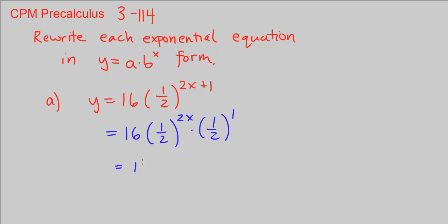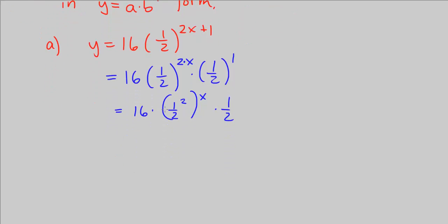That gives us 16 times one-half to the power of 2x. We can rewrite this as one-half to the power of 2 times x, or one-half to the power of 2 then raised to x, times one-half. One-half to the power of 1 is just one-half. That's going to allow us to combine the two constants, 16 and one-half. 16 times one-half, if you use your calculator, we know that's 8.